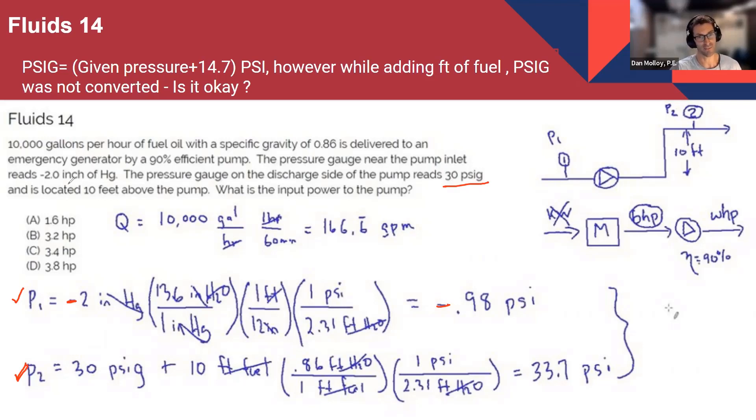But there's kind of two ways, right? There's the fundamental physics idea that a negative pressure must be gauged because there's no such thing as negative pressure. And secondly, it tells you it's read from a gauge. I see.